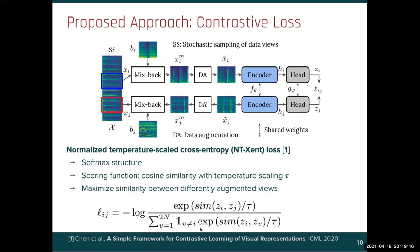In the denominator, we have the similarity of all possible negative pairs, and this is minimized.